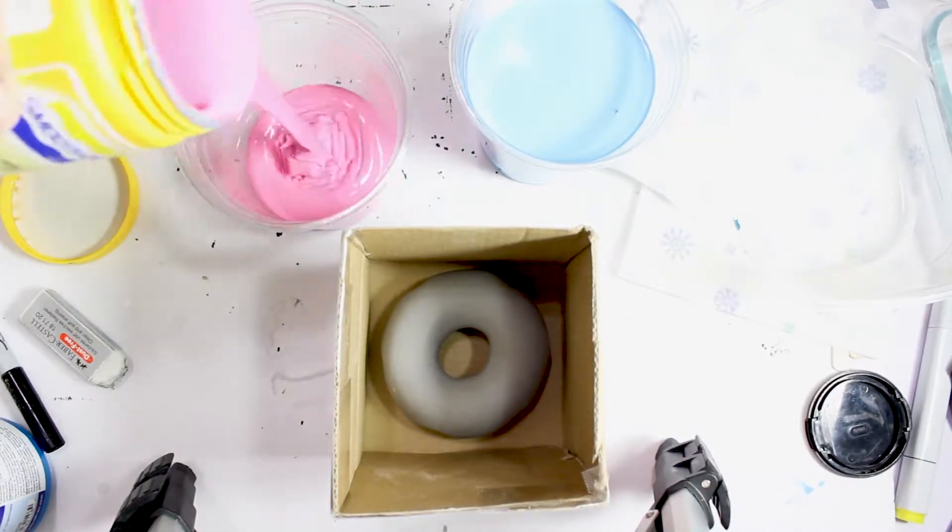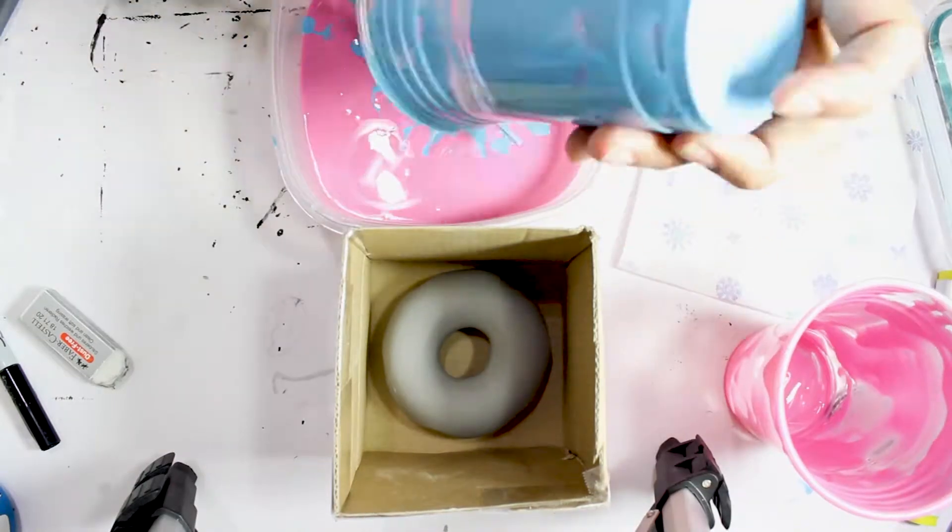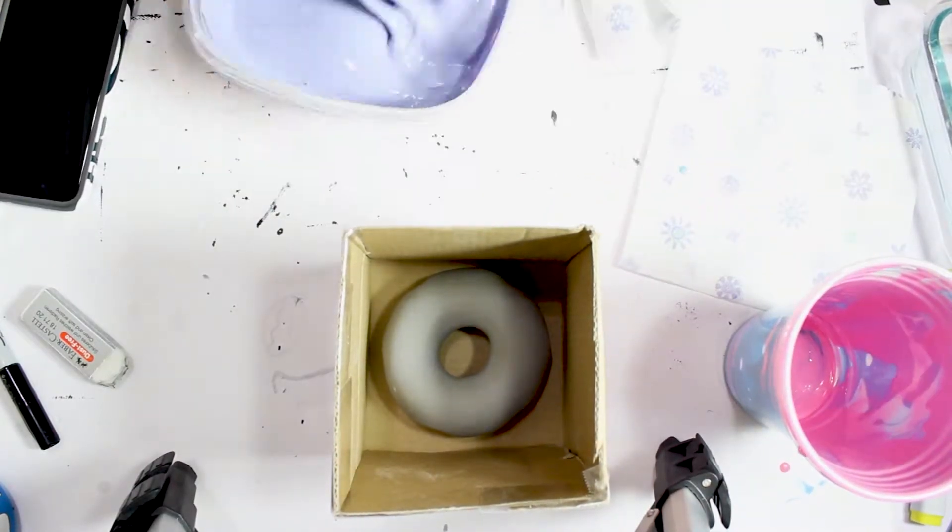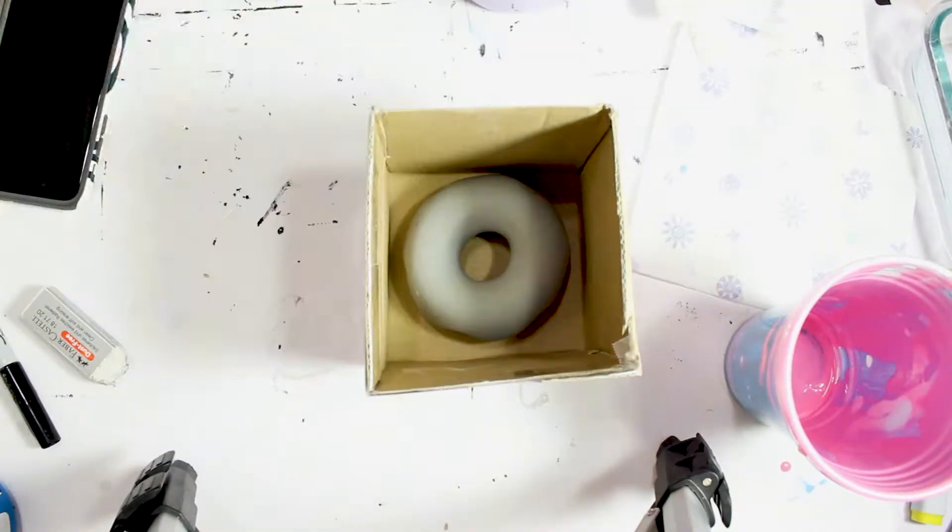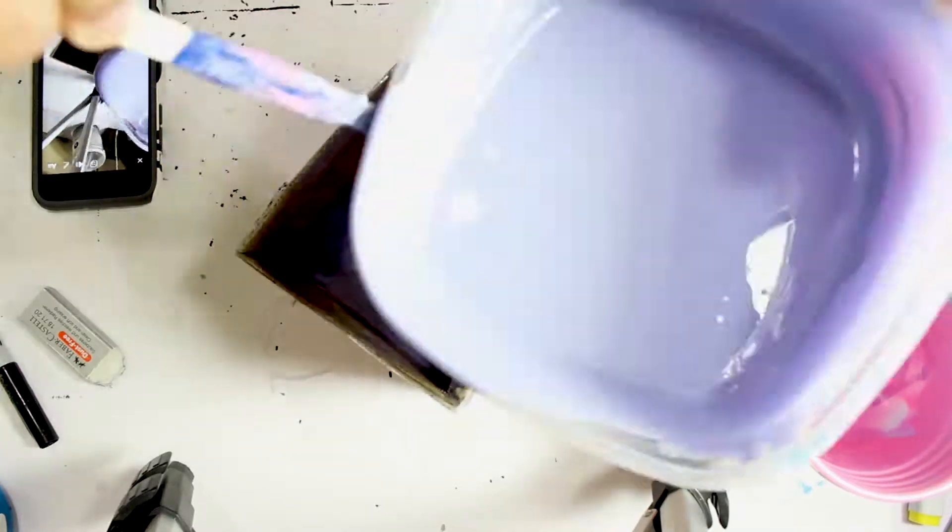Now it's time to make the mold. I used Smooth On 25. What you're going to do is you're going to mix these two parts together. You're going to stir until the colors mix together and it's a nice purplish blue, whatever you want to call that color. Pour it over your figure and then wait about six hours for it to set.